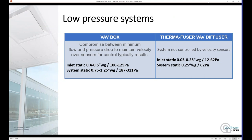When you design a traditional VAV box system, you're always making a compromise between the minimum flow of the VAV box versus the pressure drop over the box. A modern VAV box uses differential pressure sensors to calculate or measure flow, and then uses that flow as part of its control algorithm. So there's always got to be a minimum velocity, and that works out into this compromise. What it typically means from a pressure point of view is you usually end up with an inlet static on the box of anywhere from 0.4 to 0.5 of an inch. Working that back to your fan, you're looking at system statics of anywhere from three-quarters to one-and-a-quarter-inch water gauge.